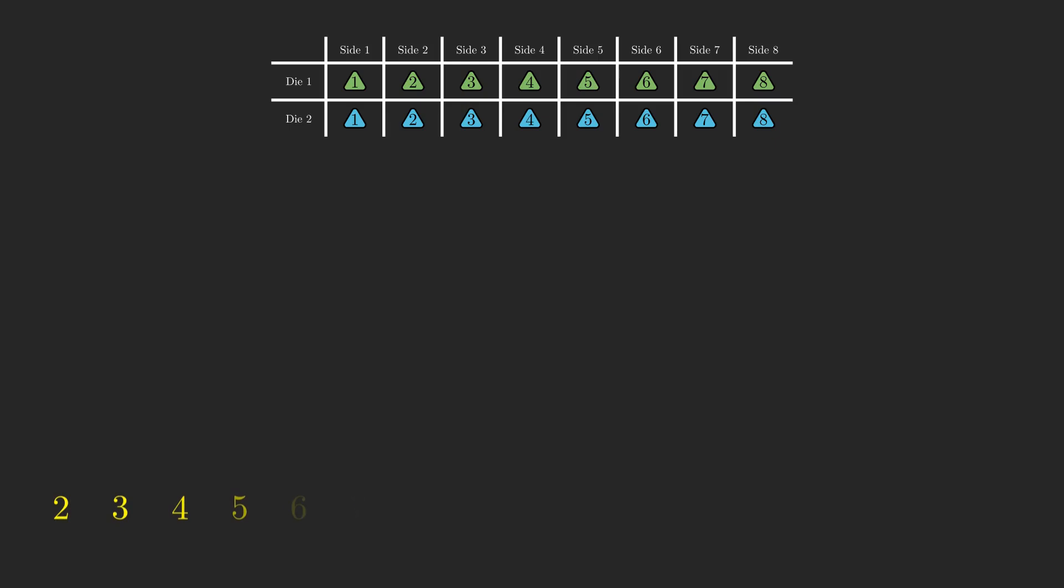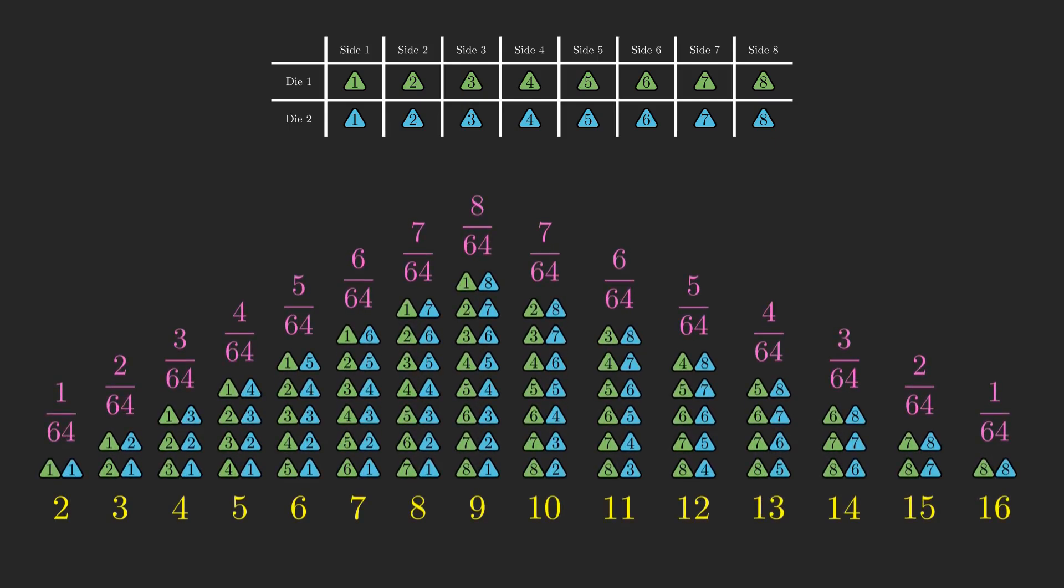With 8-sided dice, you get this probability distribution of outcomes for the totals. And now we play the same game. Can we construct a new pair of 8-sided dice with positive integers on each side, such that the probability distribution of all possible totals is the same as with normal 8-sided dice?